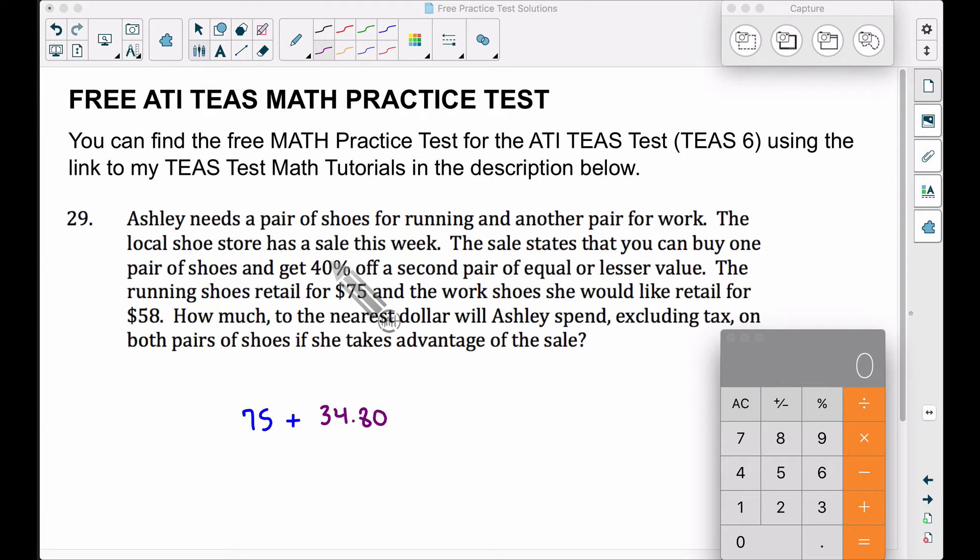100% minus 40% is 60%. So check this out. Let's find 60% of the $58 and boom, $34.80.